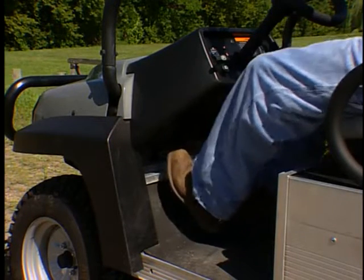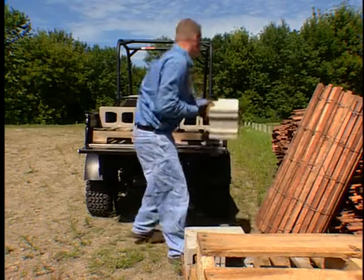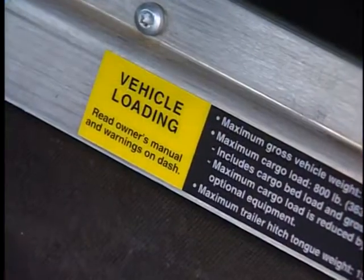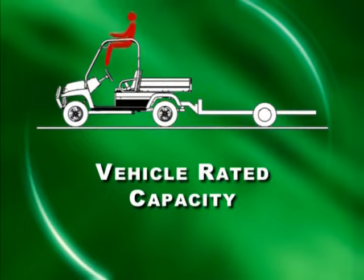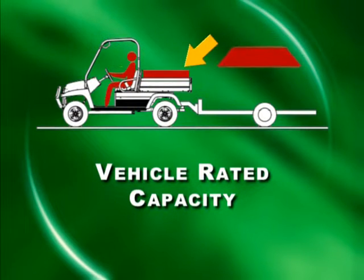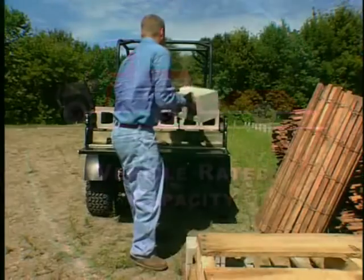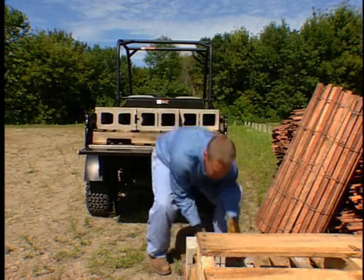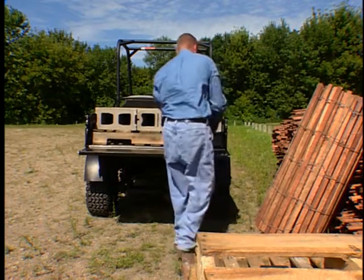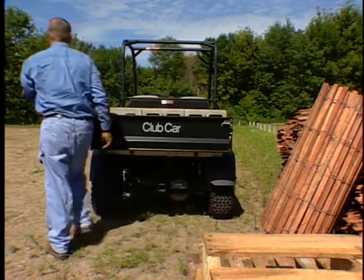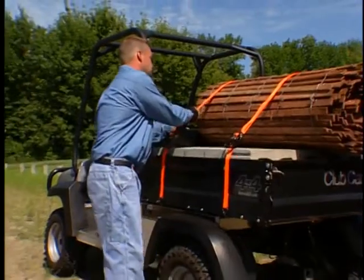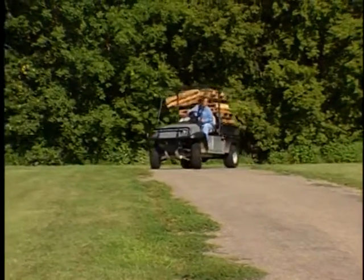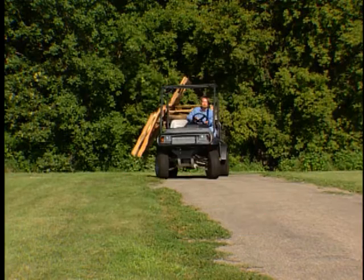Before loading the cargo bed, engage the park brake. Do not exceed the vehicle's rated capacity — check the vehicle loading decal for maximum rated capacities. The vehicle rated capacity is the combined weight of the operator and passenger, the cargo bed load, and the gross trailer weight; accessories must also be included. The vehicle rated capacity is for level surfaces only. Do not place loads on the tailgate — the tailgate should be up and securely latched while moving. Make sure the cargo is evenly distributed and well secured. Avoid top-heavy or unsecured loads that could cause loss of load or vehicle rollover, causing serious injury or death.